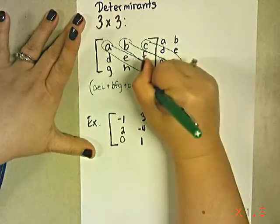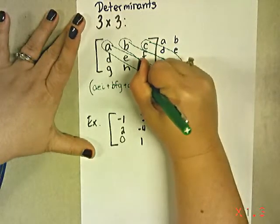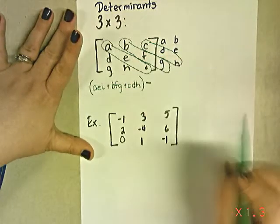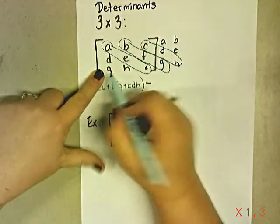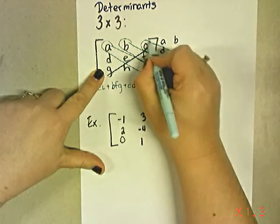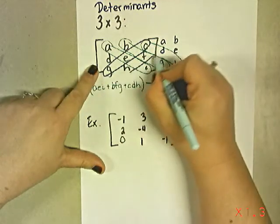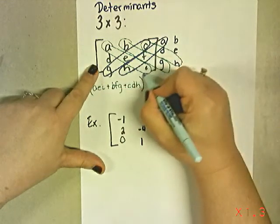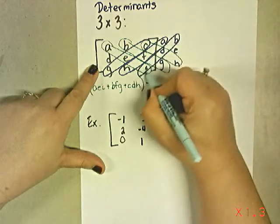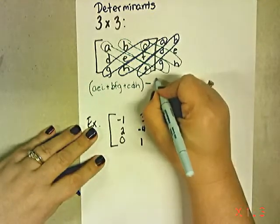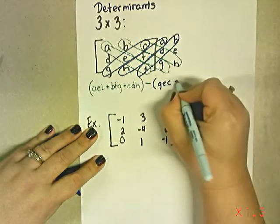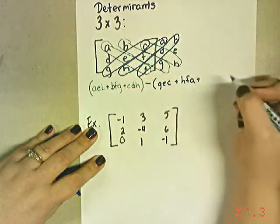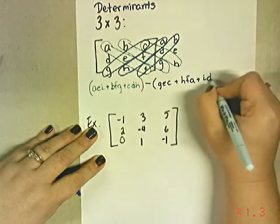Then just like we did with 2x2 matrices, we're going to subtract the diagonals going the other way. So we're going to start in the bottom left corner and do our diagonals again. And we're going to put those in another big parenthesis. So we're going to have GEC plus HFA plus IDB.